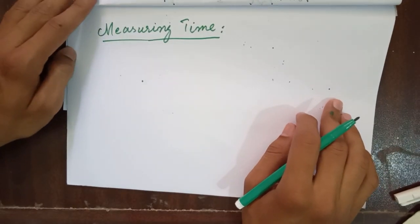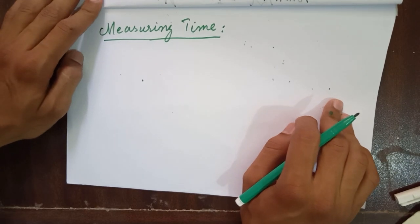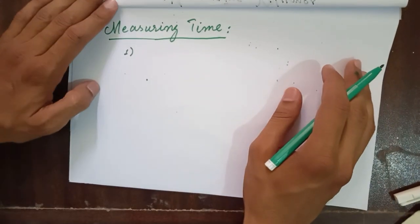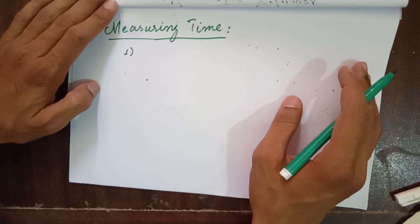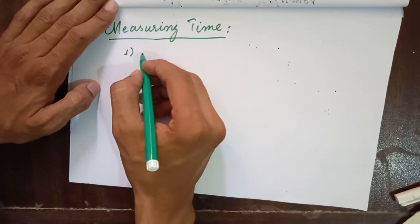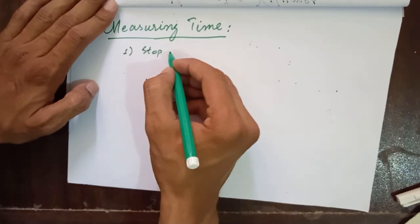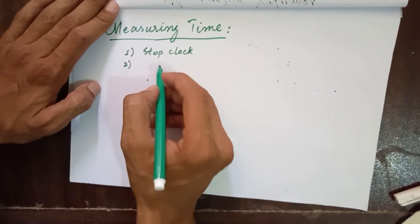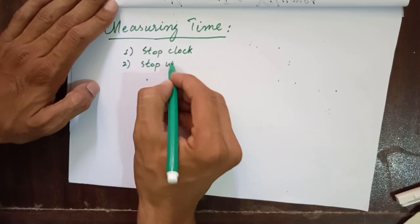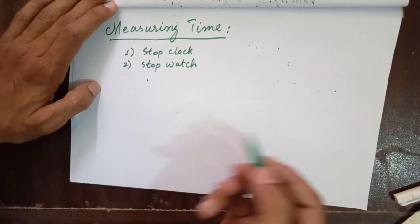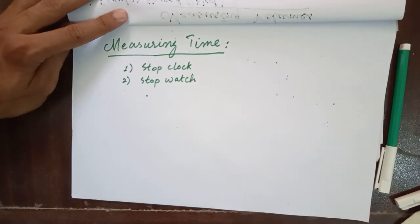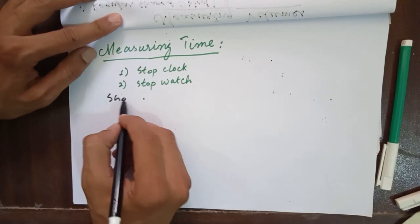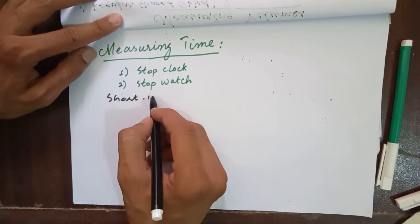Another important measurement that we usually take in the laboratory is the measurement of time. We usually use two apparatus. One is the stop clock, and another is the stopwatch. Both work in the same order. The important use of time measurement is to calculate short intervals of time.